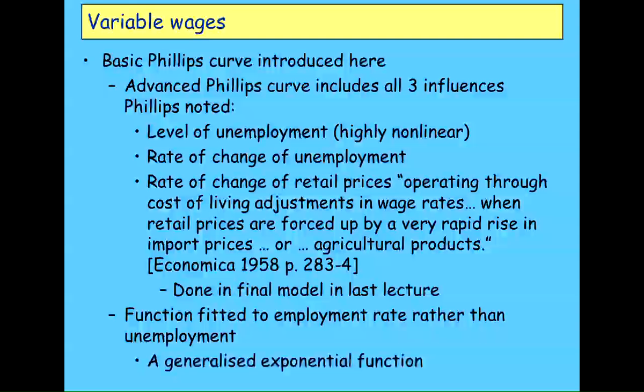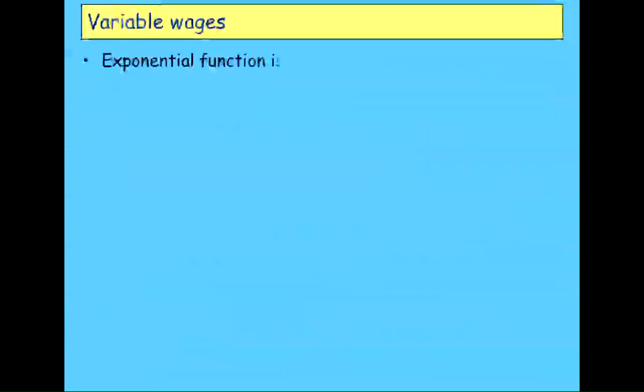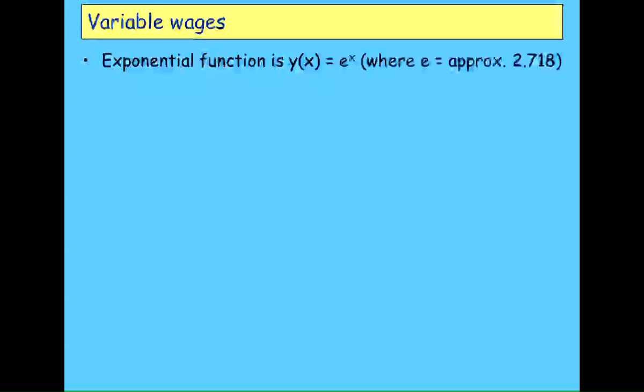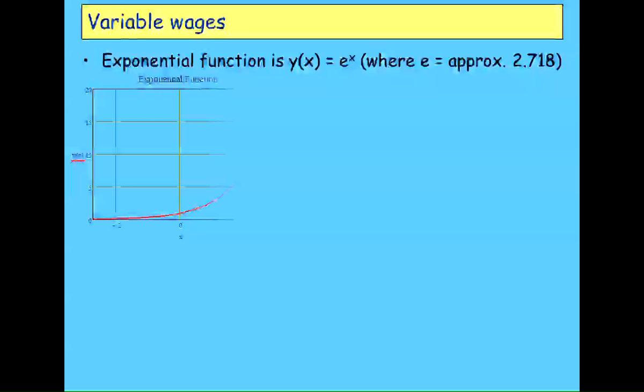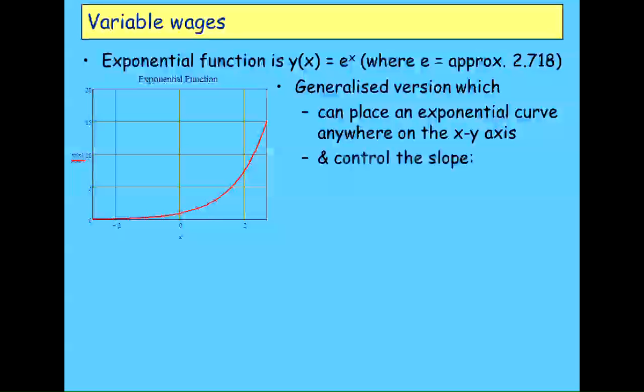I don't bring all those three factors in here, but I do bring them in a later lecture when I build a more general model. I'm just going to bring in simply the impact of the level of unemployment on the rate of change of money wages. What I'm using is what I call a generalized exponential function. The basic exponential function says something which is a function of x equals e raised to the power of x, where e is roughly 2.718, the exponential constant.